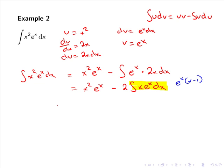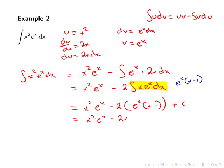So the integral of x squared e to the x dx is given by x squared e to the x minus 2 multiplied by e to the x times (x minus 1), plus an arbitrary constant c. Expanding this out: x squared e to the x minus 2x e to the x plus 2 e to the x plus c. Taking out a common factor of e to the x gives e to the x times (x squared minus 2x plus 2) plus c.